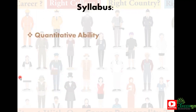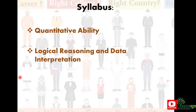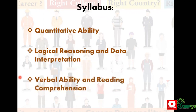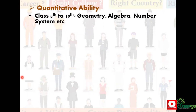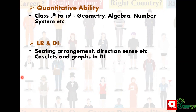Let's begin with the syllabus. CAT tests three basic aspects: quantitative ability, logical reasoning and data interpretation, and verbal ability and reading comprehension. Under quantitative abilities, we have number systems, and basic maths will be tested — essentially your class 10th level maths. Topics like number systems, permutations, measurements, and all of these things will be tested.